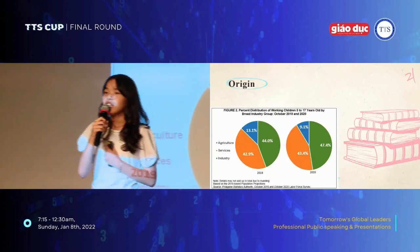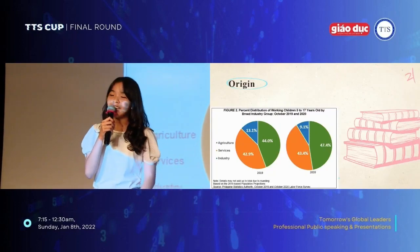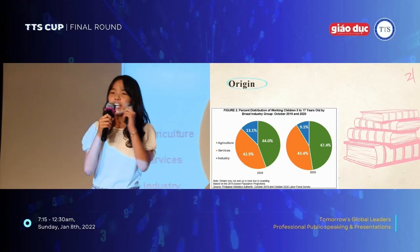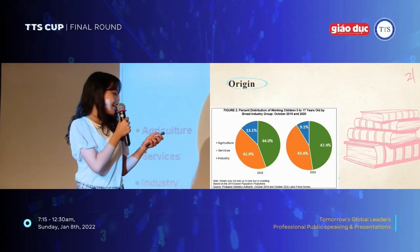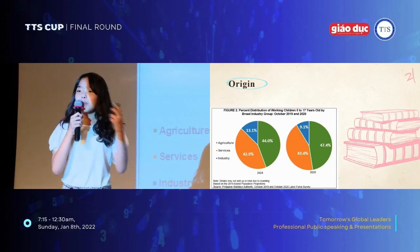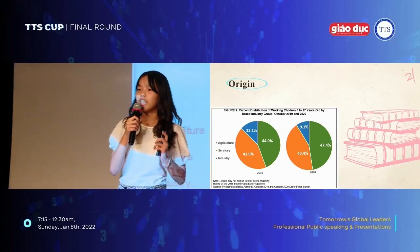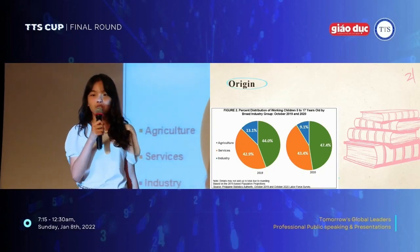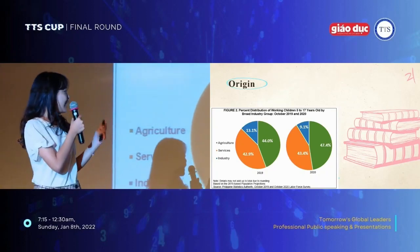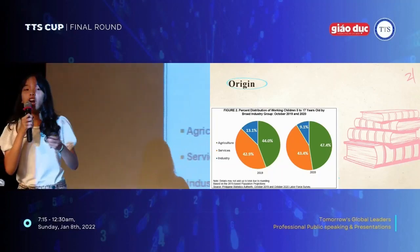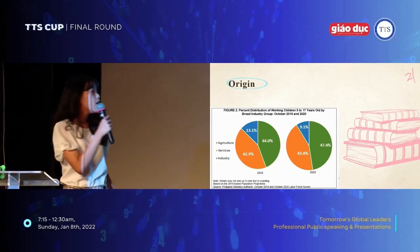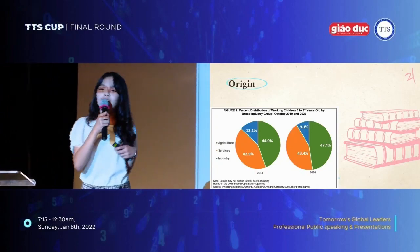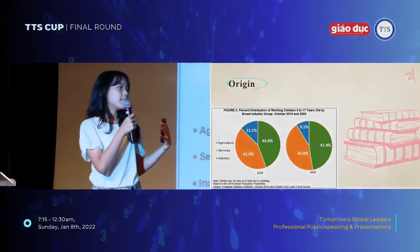Approximately, child labor started happening in the United States between the 1700s and 1800s, but started occurring in the entire world in the 1930s. I want you to have a good look at these two pie charts. As you can see from the bold words, they illustrate the percent distribution of working children from 5 to 17 years old by broad industry groups. Clearly, we can see that there are three broad industry groups — agriculture, services, and industry — illustrated by three different colors. From these two pie charts, we can conclude that throughout these two timelines, there isn't much of a significant difference due to the lack of change in the percentages.